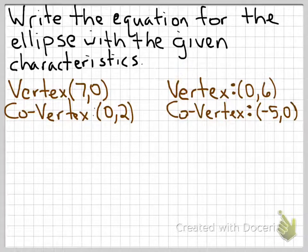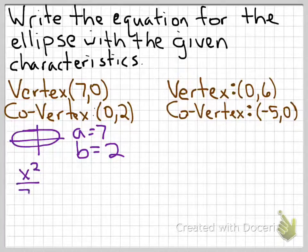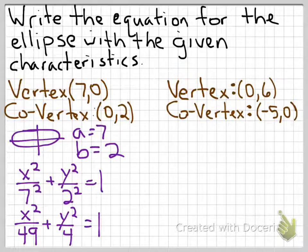Now let's write an equation for an ellipse given certain information. Given a vertex at (7, 0) and a co-vertex at (0, 2), the vertex at (7, 0) tells us it stretches more in the horizontal direction, so a is 7 and b is 2. The equation is x squared over 7 squared plus y squared over 2 squared equals 1, which simplifies to x squared over 49 plus y squared over 4 equals 1. We could also find the foci if needed and match the graph.